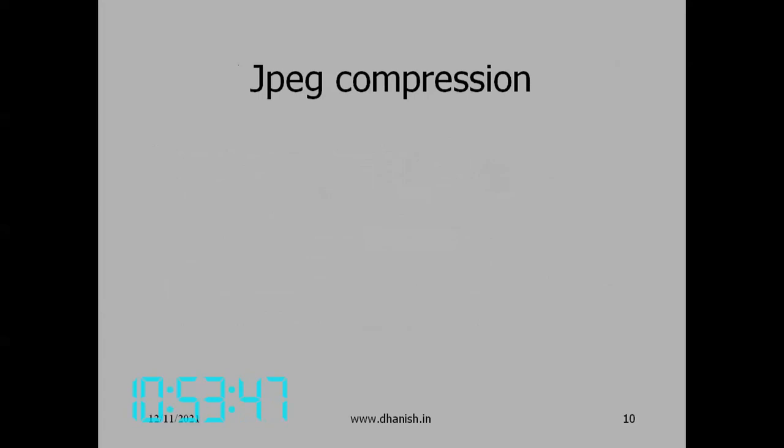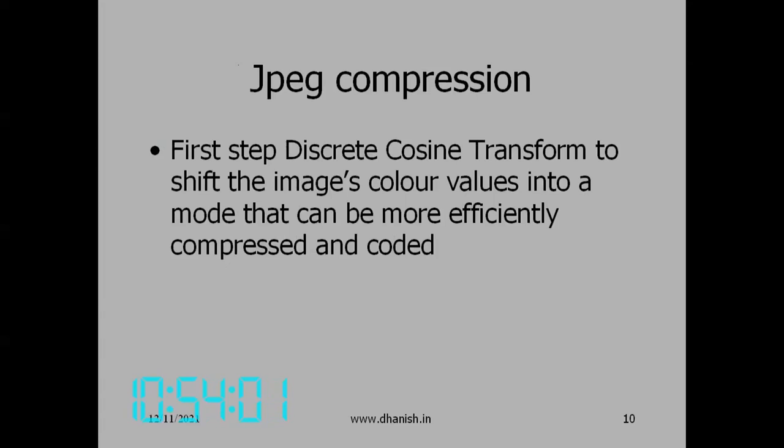The most popular lossy compression format — almost universal on the internet — is the JPEG file format. JPEG has only three characters in the file extension because older DOS systems had that limitation. JPEG was developed by the Joint Photographic Experts Group, and it was deliberately made royalty-free because of the complaints with GIF, where companies had to pay money. Being made by an association and jointly in collaboration with camera manufacturers, it gained wide acceptance and was designed ideally for photography.